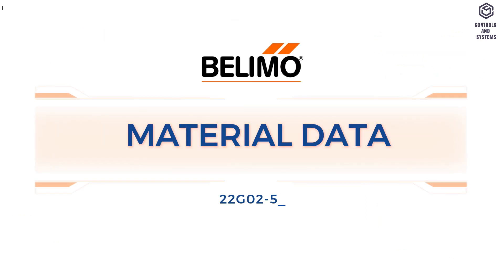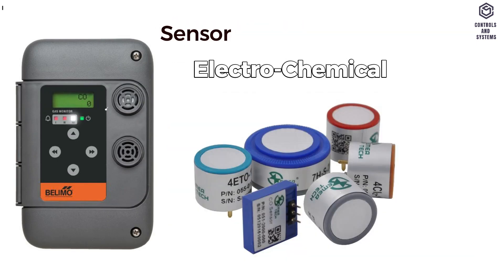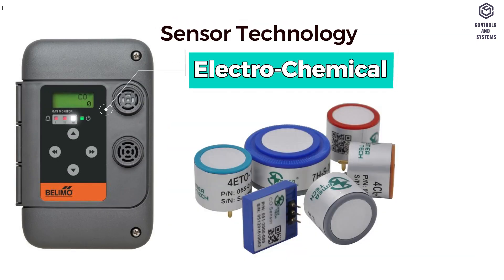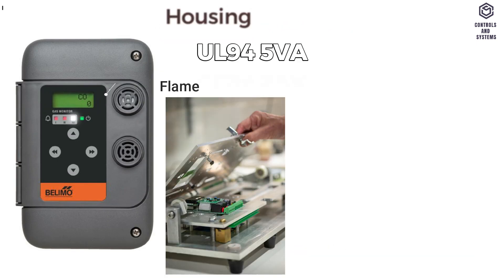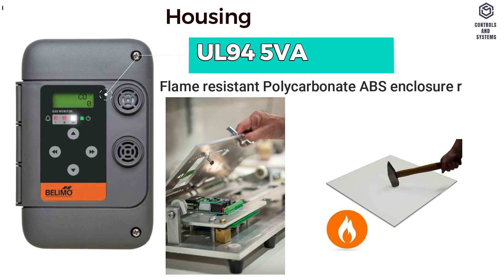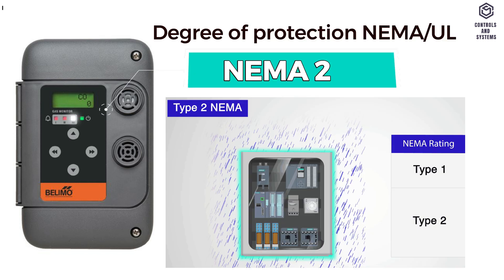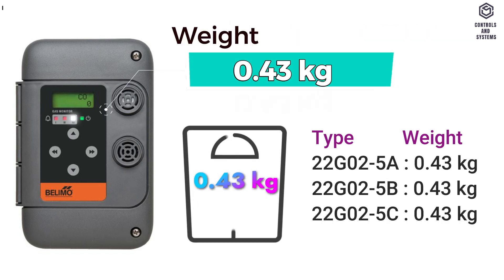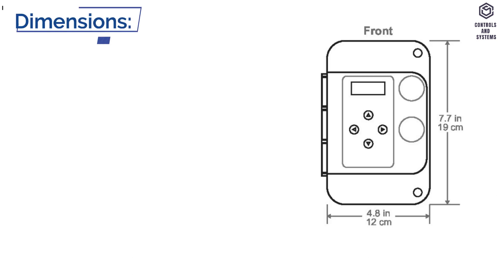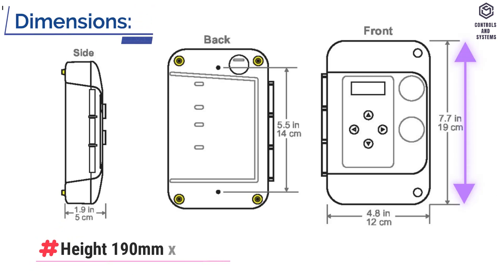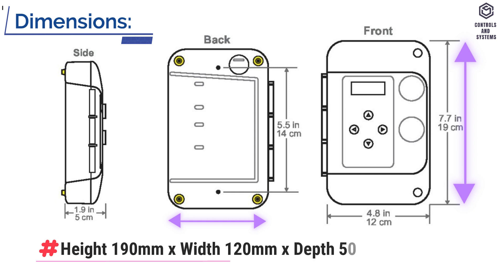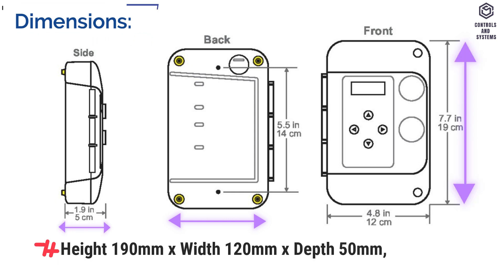Material data. Application is air. Sensor technology is electrochemical. Housing is UL 94 5VA. Degree of protection is IP44 and NEMA 2. Weight is 0.43 kg. Dimensions: height 190 mm, width 120 mm, depth 50 mm.